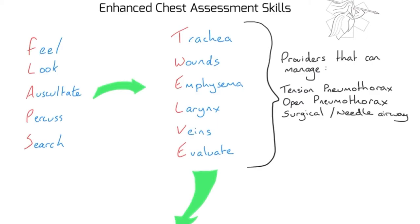We use the FLAPS-12 system to remind us what to do so we don't miss anything. It's part of our structured systematic approach, ensuring we don't miss any potential reversible life-threatening conditions. FLAPS is concerned primarily with the assessment of the patient's chest, and 12 is concerned primarily with the assessment of the patient's neck, which also gives us some idea of what's going on inside the chest.